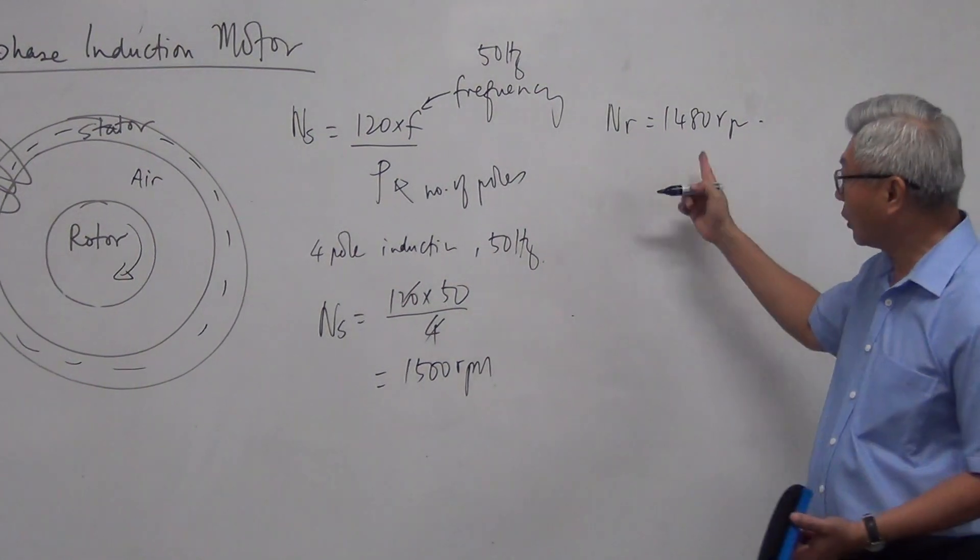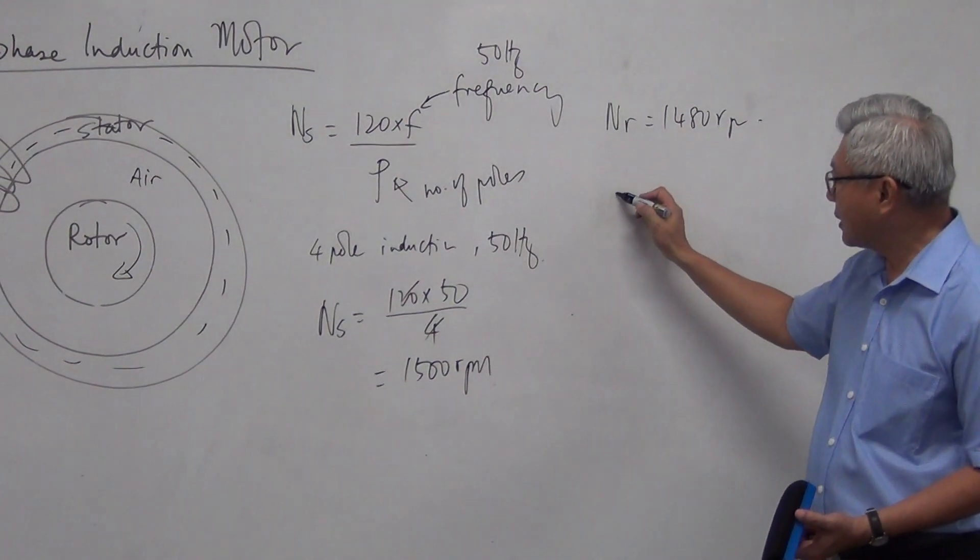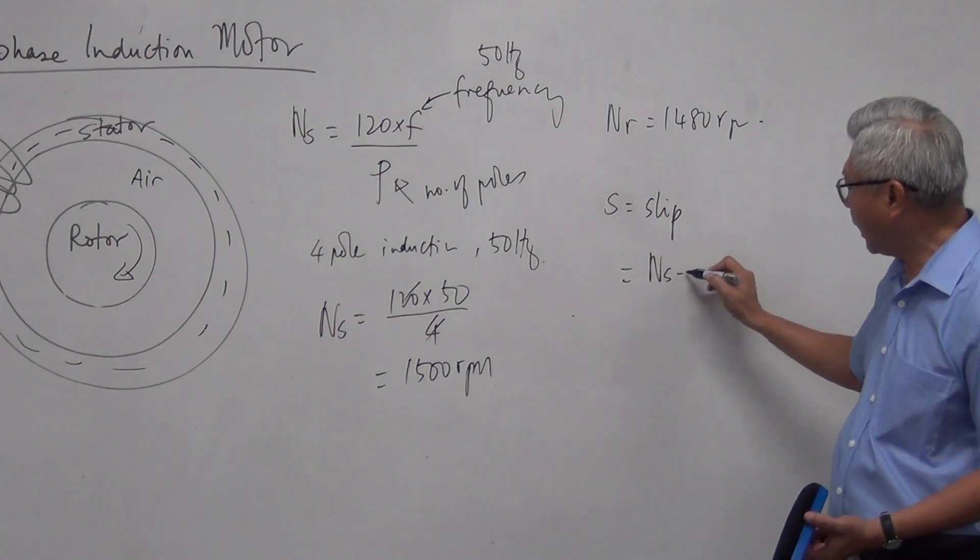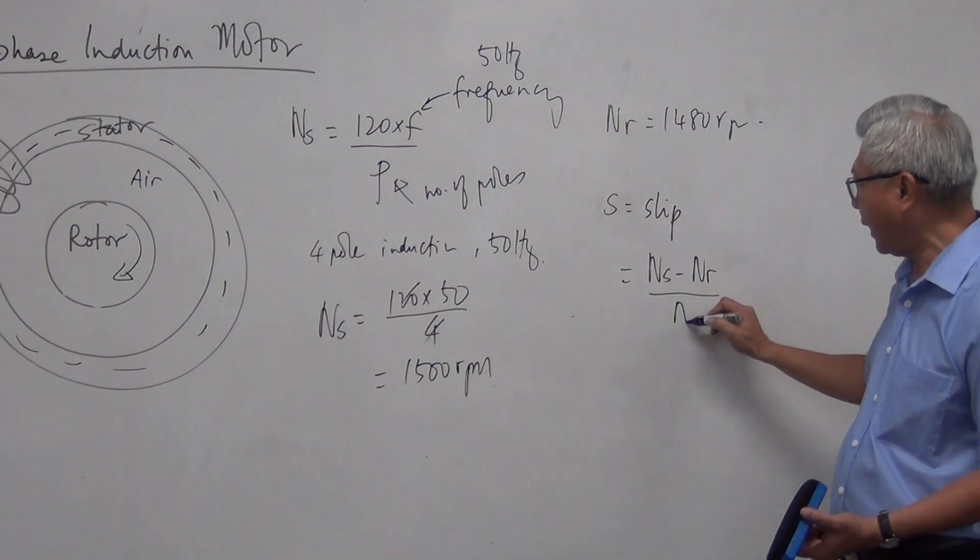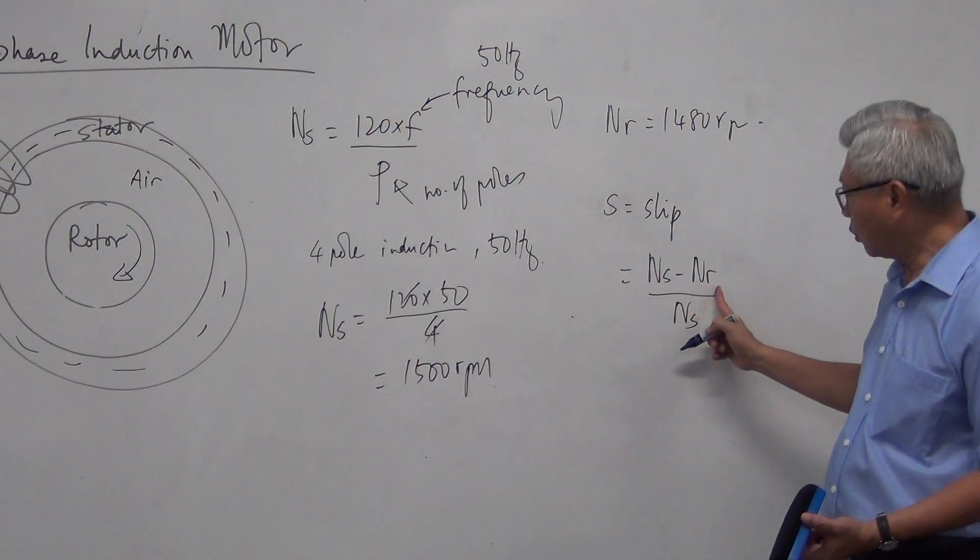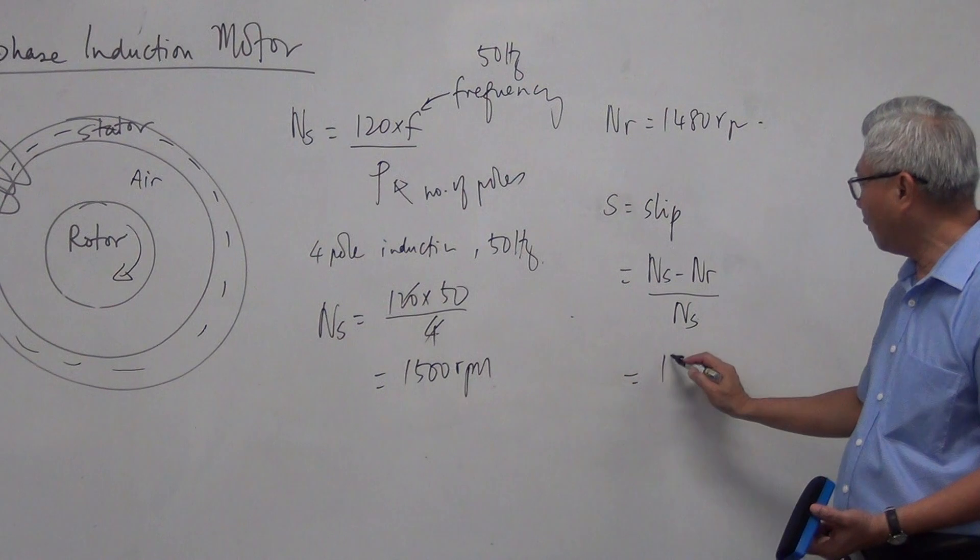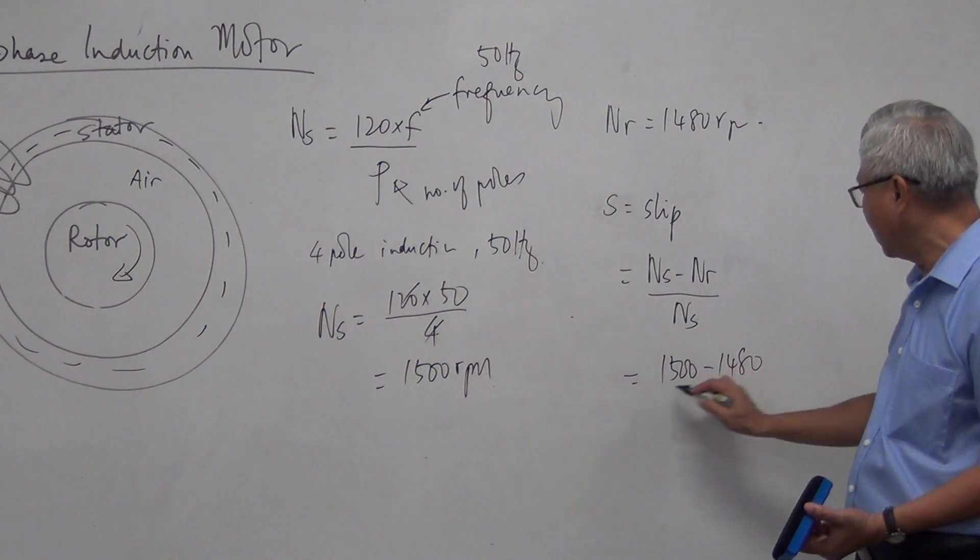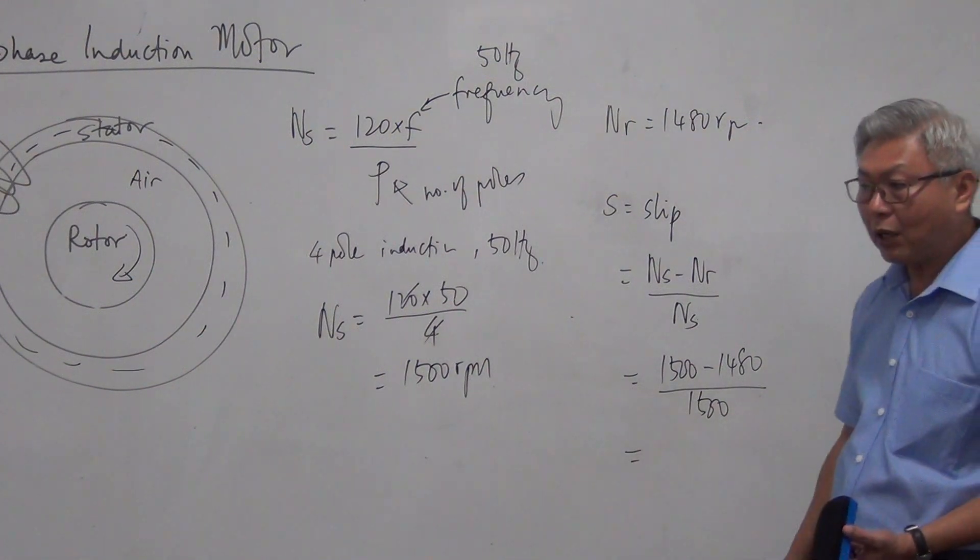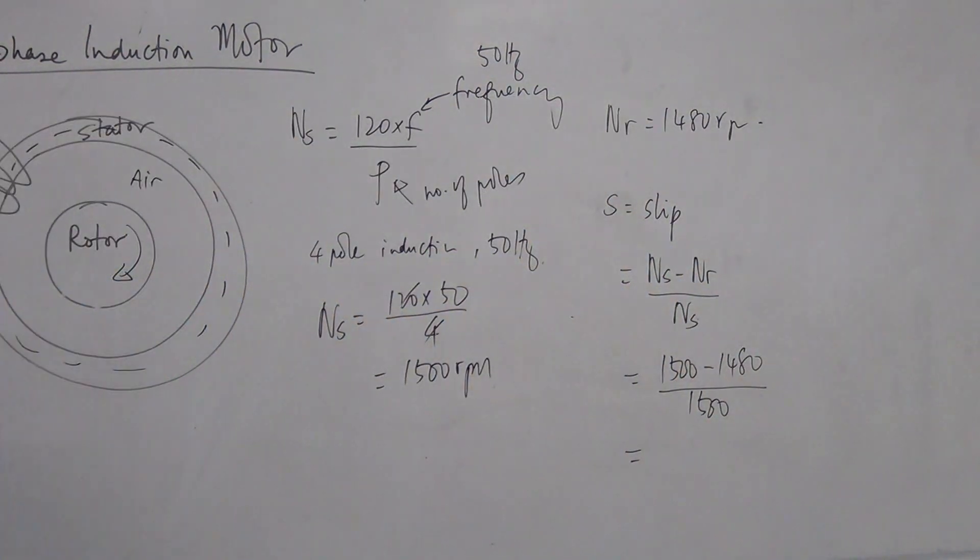And if I were to tell you that the motor now runs at 1480 RPM, that is called the rotor speed. Then the slip is equal to NS minus NR divided by NS. The difference between the synchronous speed and the rotor speed. So it's 1500 minus 1480 divided by 1500. It is a ratio, so it has no units.